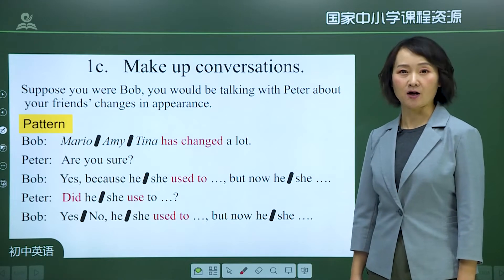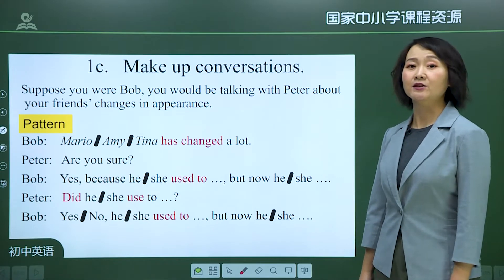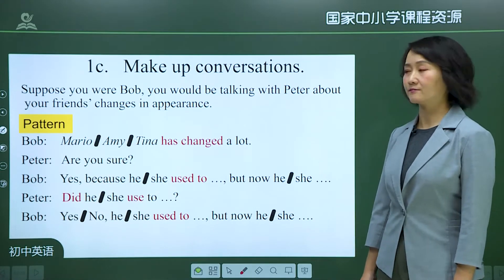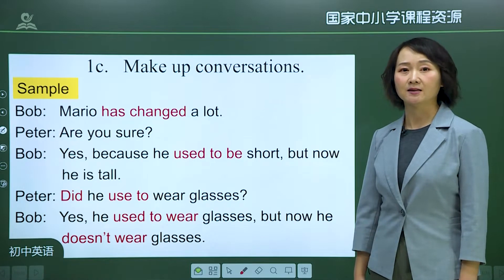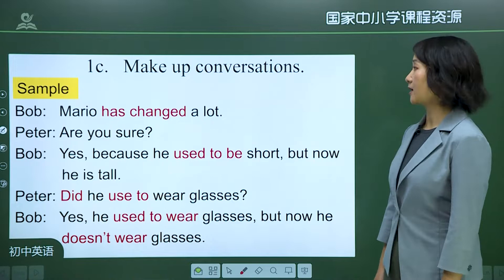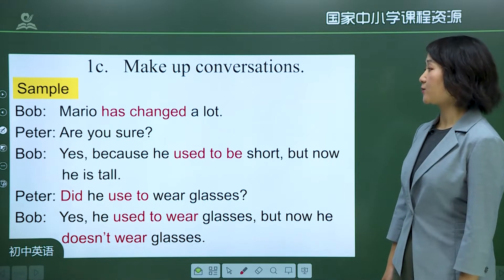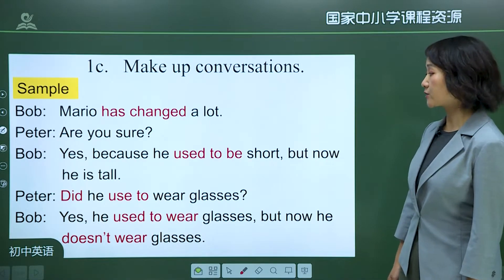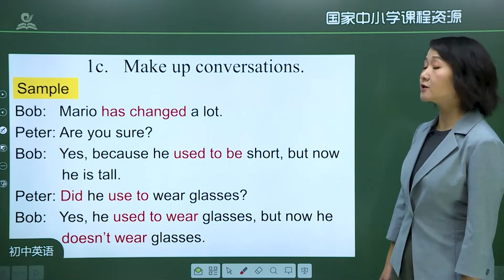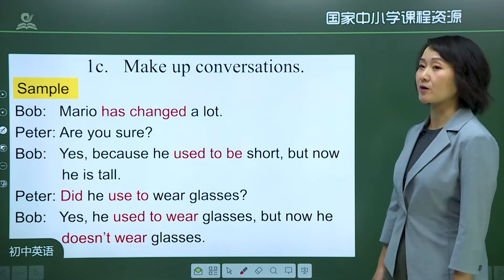Suppose you were Bob, talking with Peter about your friend's changes in appearance. Here is a pattern. Look at this sample: 'Mario has changed a lot.' 'Are you sure?' 'Yes, because he used to be short, but now he's tall.' 'Did he used to wear glasses?' 'Yes, he used to wear glasses, but now he doesn't.'